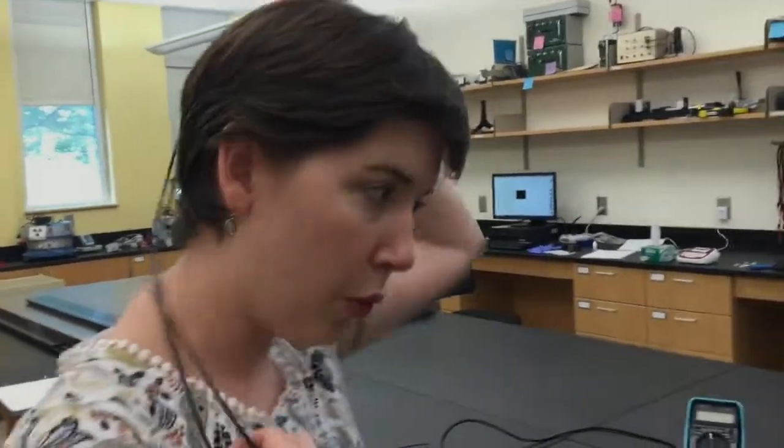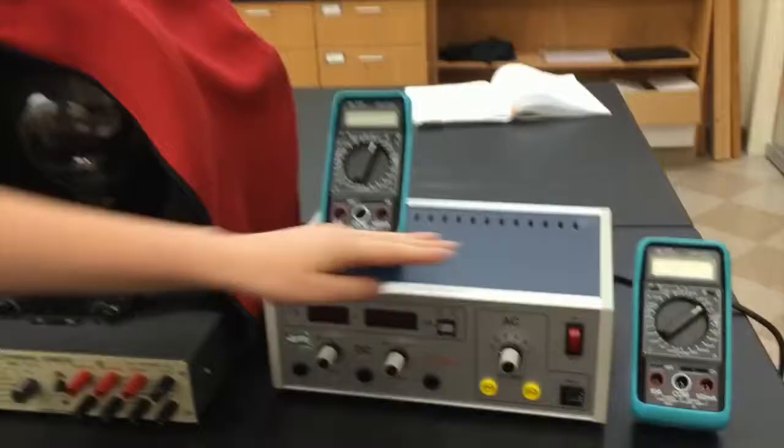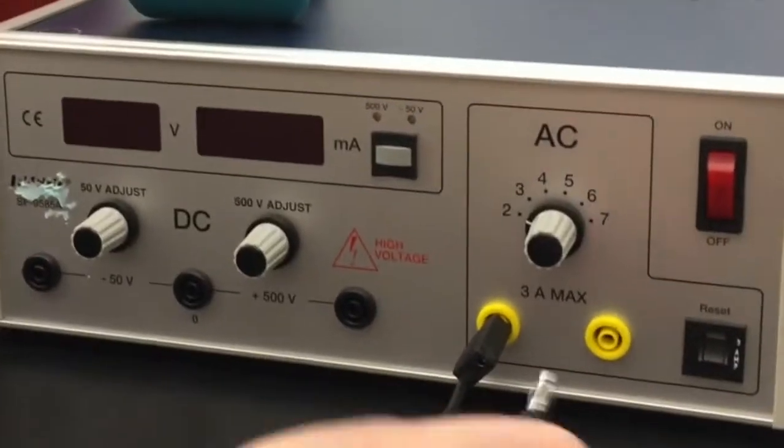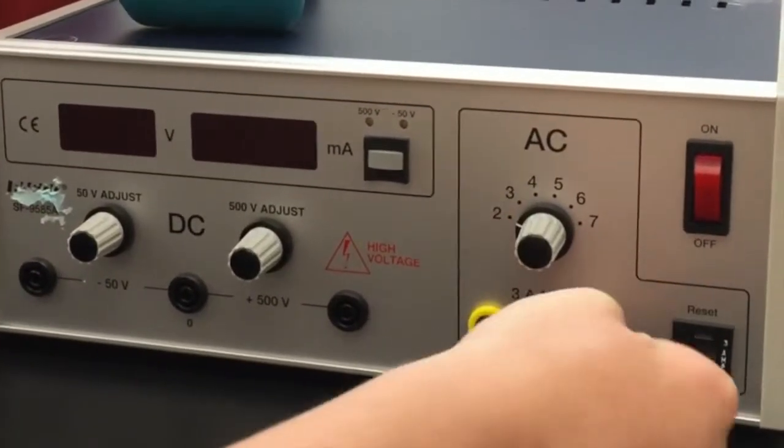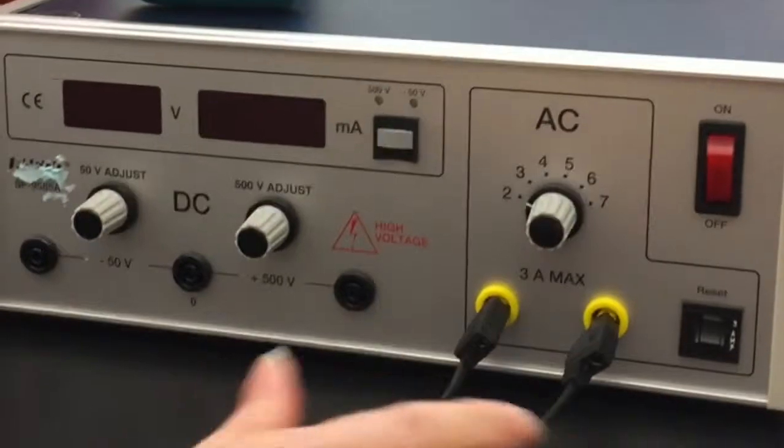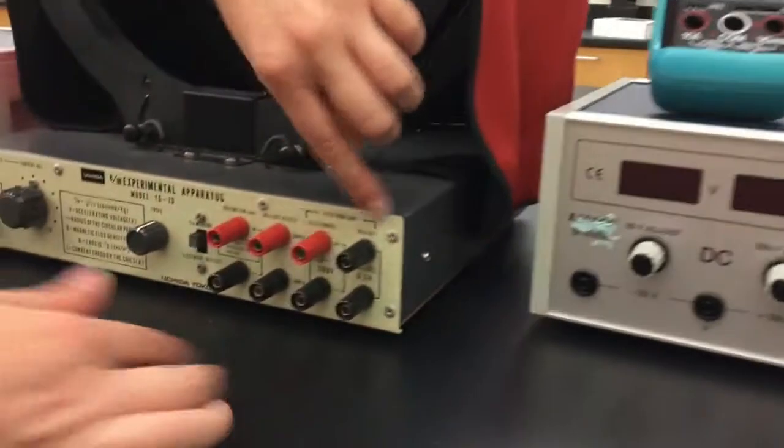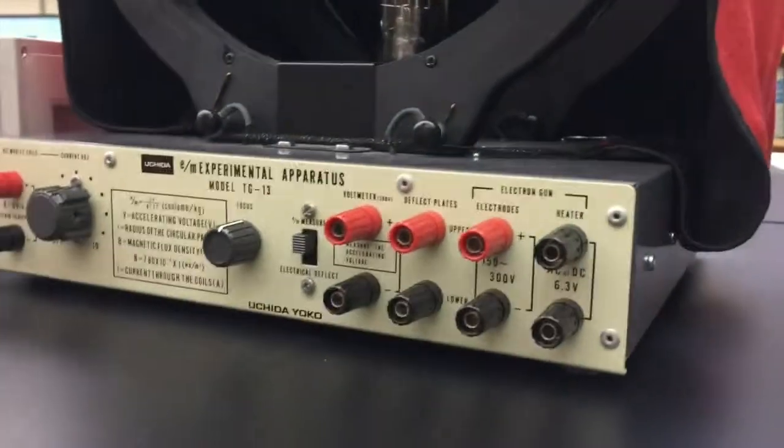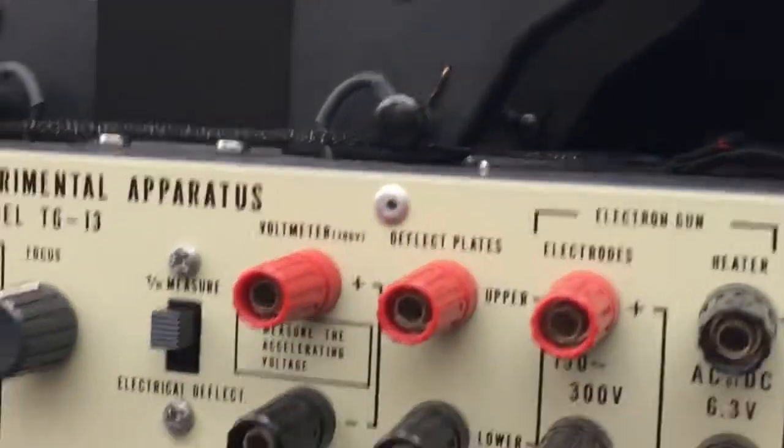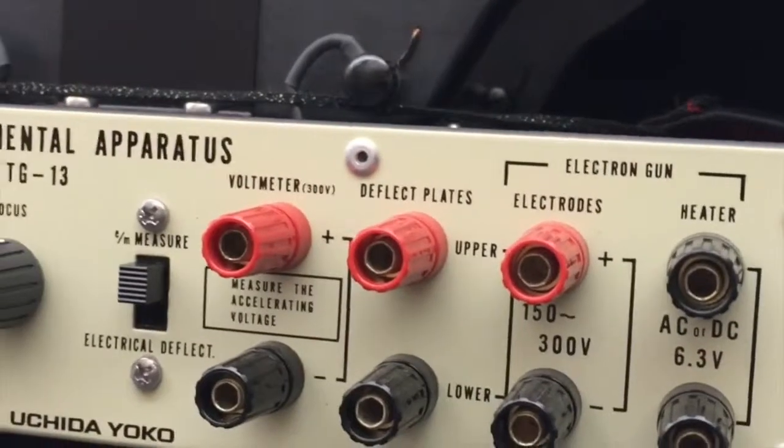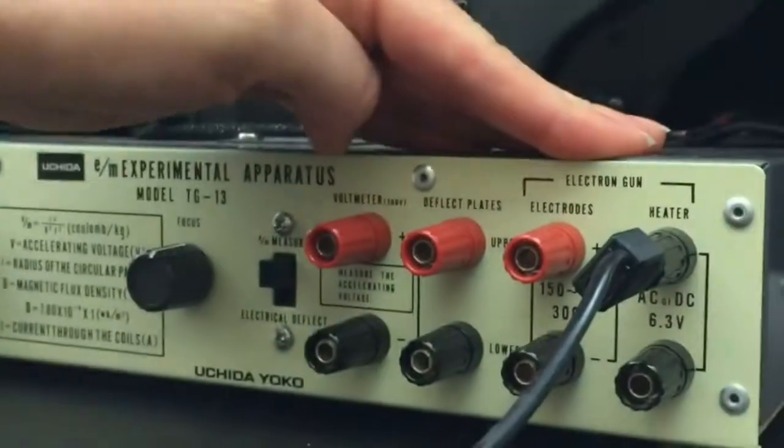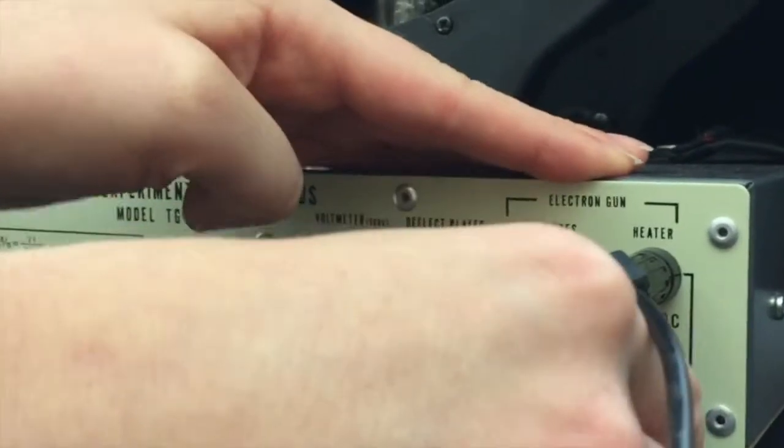So the first connection is going to be with the power to the heater. For this, we're going to use the AC on our high voltage, and it doesn't matter the order that you connect this in or the color of the cable, but make sure that it's off first. And that's going to connect to what's labeled heater here. And you see underneath that says AC or DC 6.3 volts. So you use two banana cables, and again, it doesn't matter which one goes to which, but they plug in.